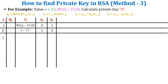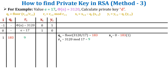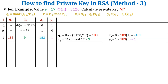Let's find the first iteration, i = 1. All formulas are shown above the table. As per formula 1, 3120 divided by 17 gives quotient 183. As per formula 2, 3120 mod 17 gives remainder 9. As per formula 3, the x coordinate is 0 − 183 × 1 = −183. As per the last formula, the y coordinate is 1 − 183 × 0 = 1. For the next iteration, i = 2.